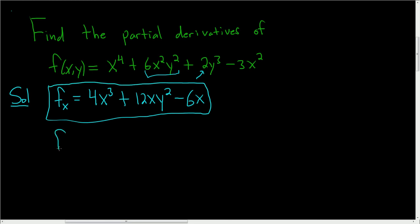Let's go ahead and find the partial derivative with respect to y. When we take the partial derivative of x to the fourth with respect to y, we're treating x as constant, so that piece is 0.